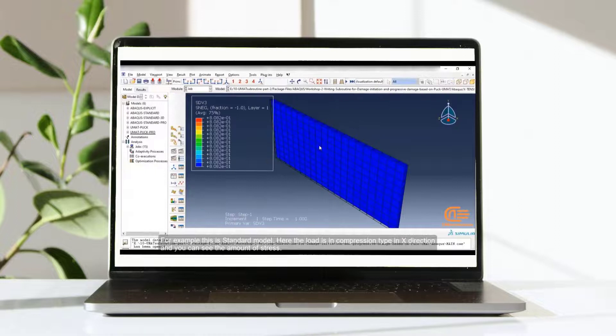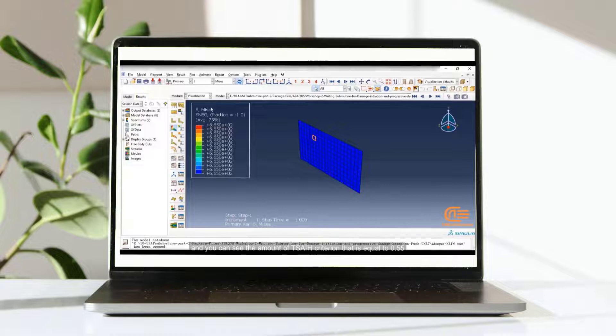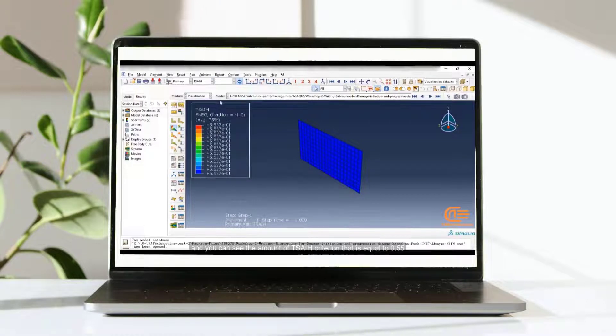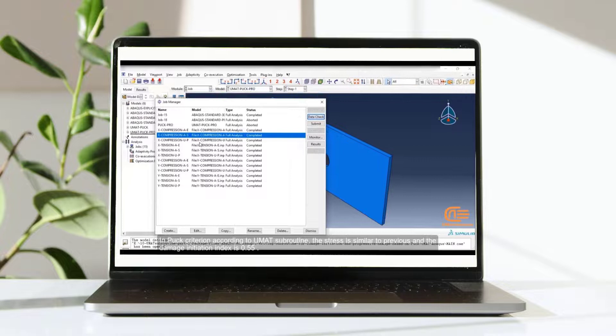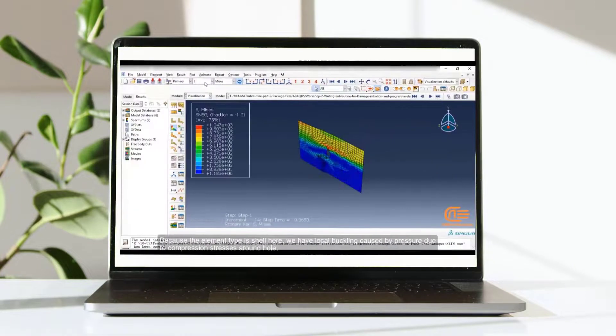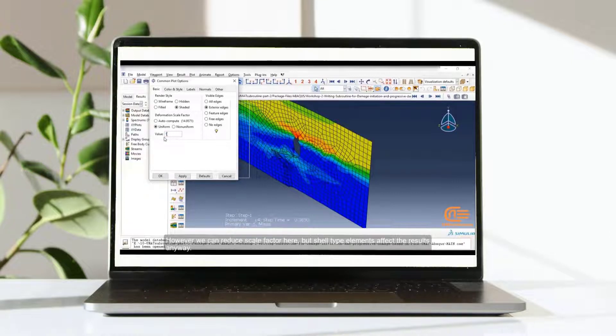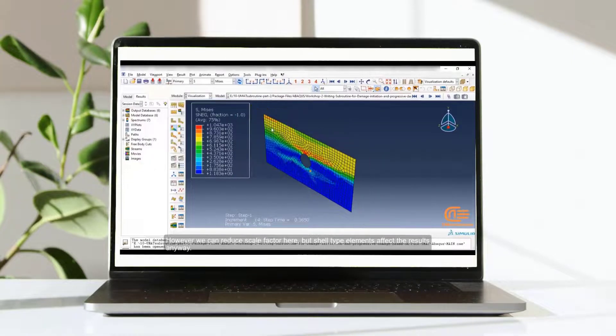For example, this is a standard model. Here the load is in compression type in x-direction and you can see the amount of stress. And you can see the amount of T-side criterion that is equal to 0.55. In Puck criterion, according to UMAT subroutine, the stress is similar to previous and the damage initiation index is 0.55. Because the element type is shell here, we have local buckling caused by pressure due to compression stresses around hole. However, we can reduce scale factor here. But shell type elements affect the results anyway.